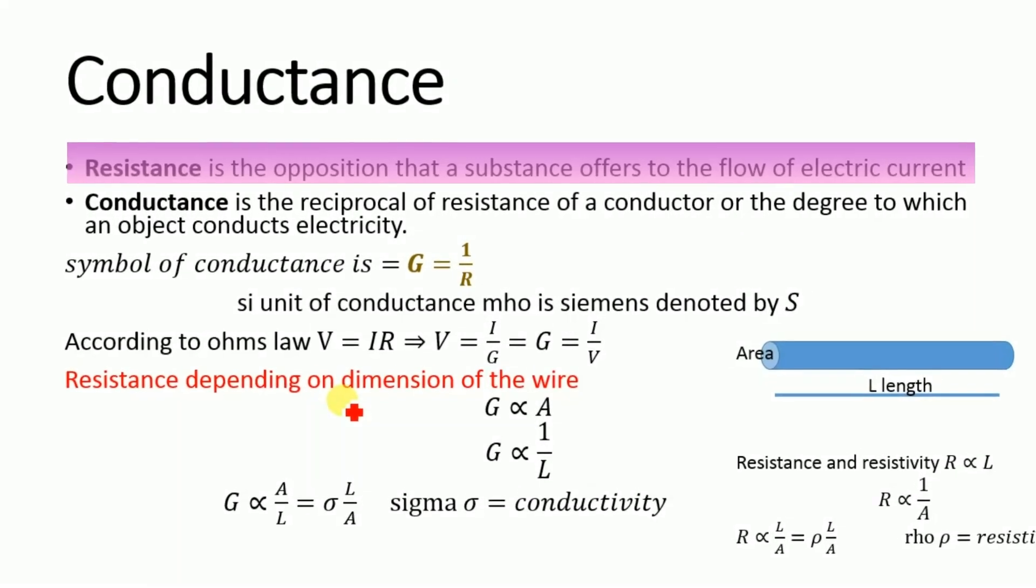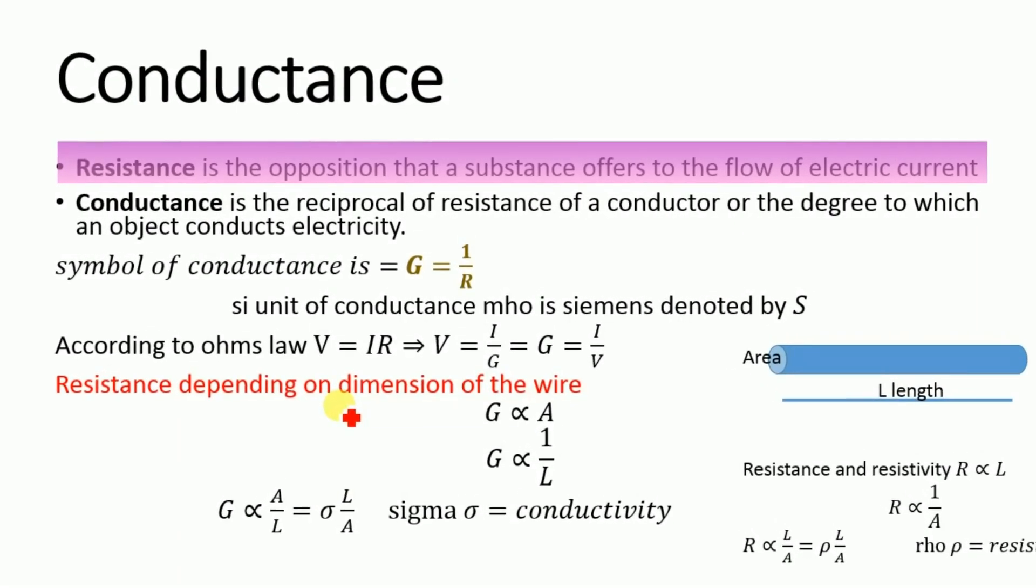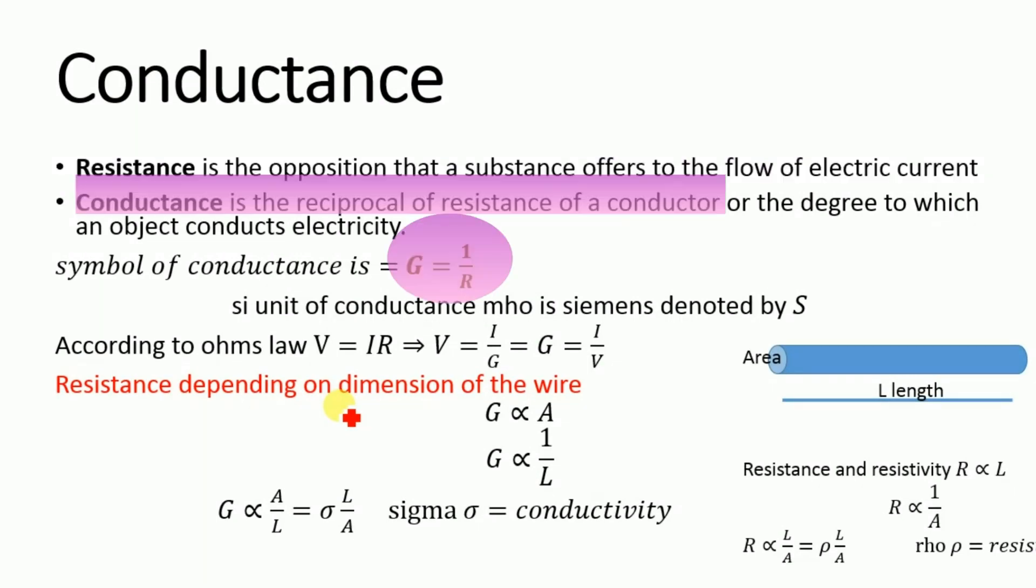We know that resistance is the opposition that a substance offers to the flow of electric current. Conductance is the reciprocal of resistance of a conductor, or the degree to which an object conducts electricity. The symbol of conductance is G, equal to 1 over R, which is the reciprocal of resistance, where R is resistance and G is conductance.